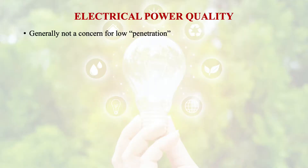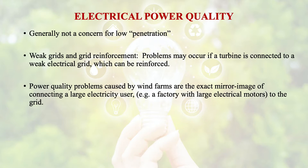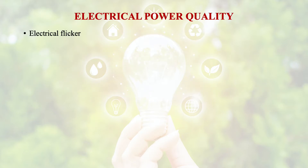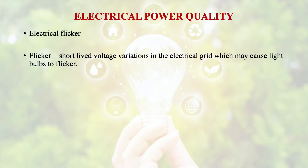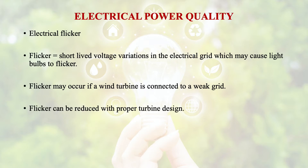Regarding electrical power quality of wind power: it is generally not a concern for low penetration. Weak grid and grid reinforcement problems may occur if a turbine is connected to a weak electrical grid, which can be reinforced. Power quality problems caused by wind farms are the exact mirror image of connecting a large electricity user — for example, a factory with large electrical motors to the grid. Sometimes electrical flicker occurs — a short-lived voltage variation in the electrical grid which may cause light bulbs to flicker — if a wind turbine is connected to a weak grid. This can be reduced with proper turbine design.